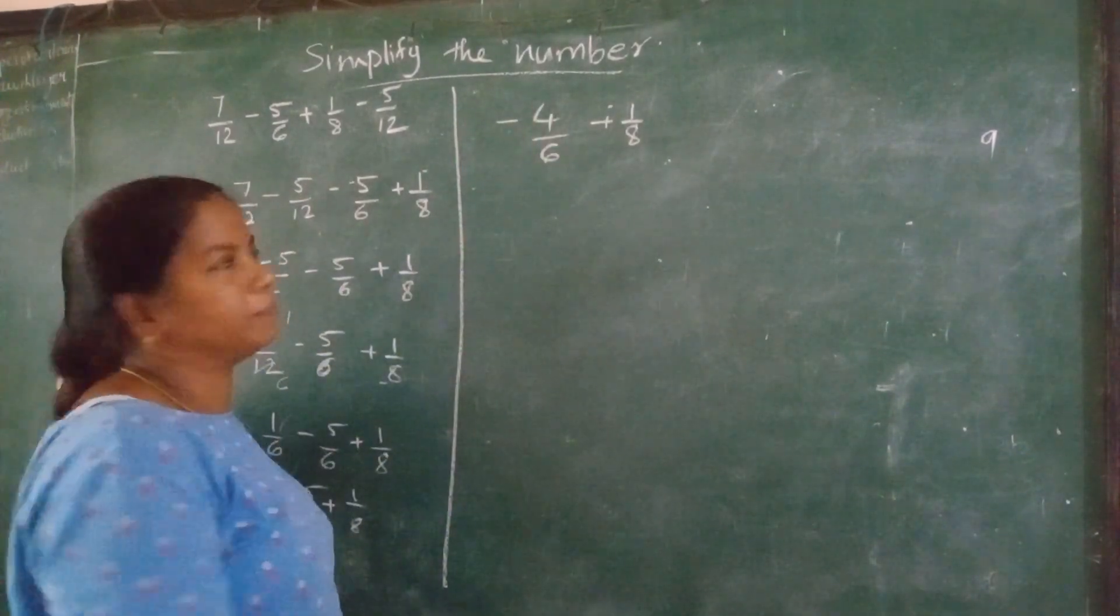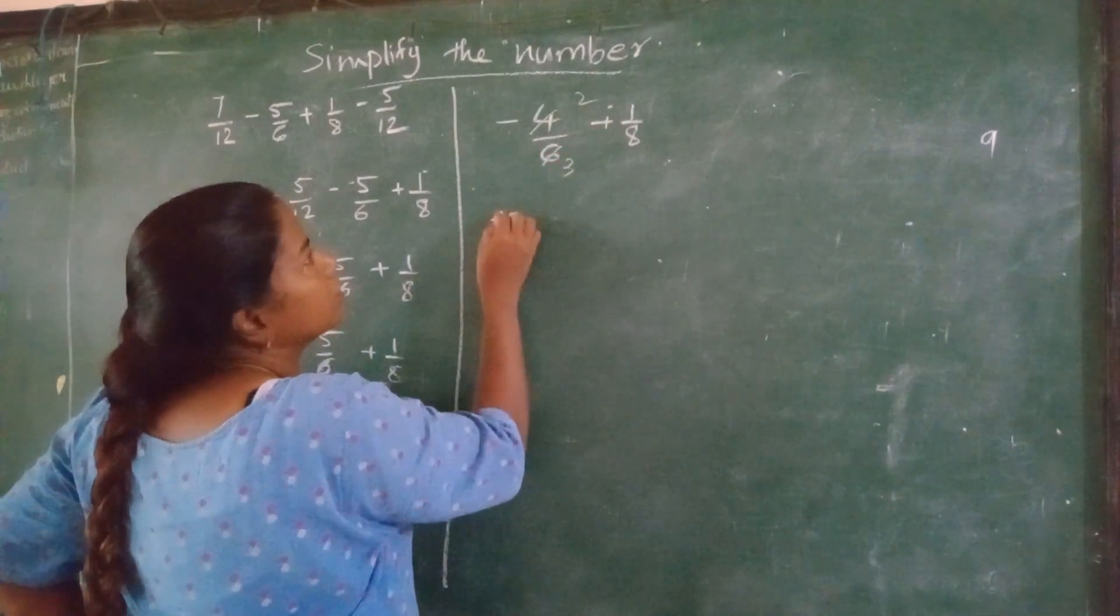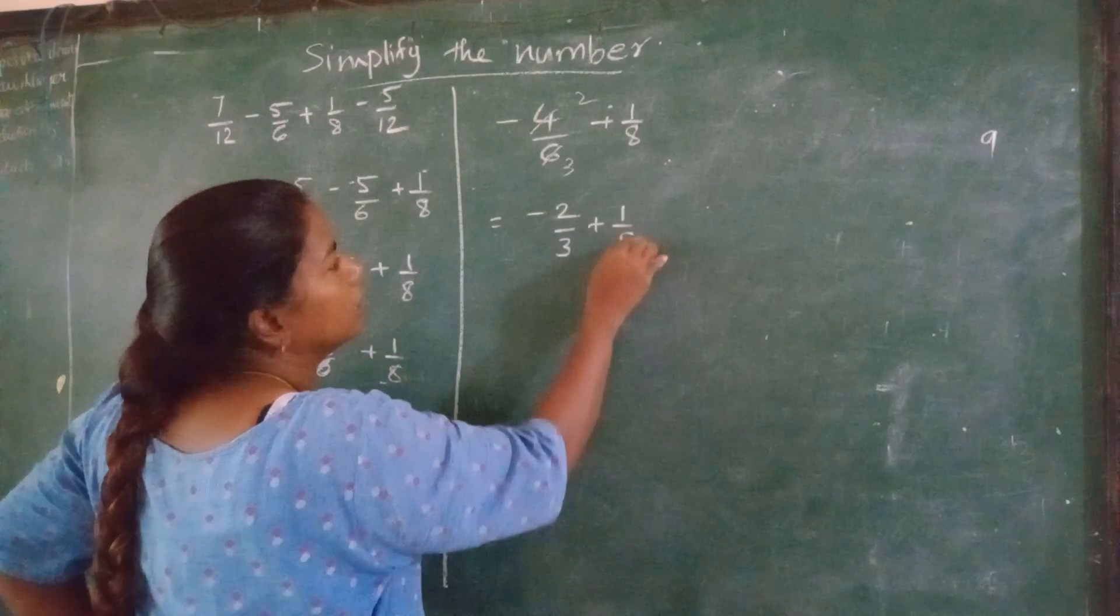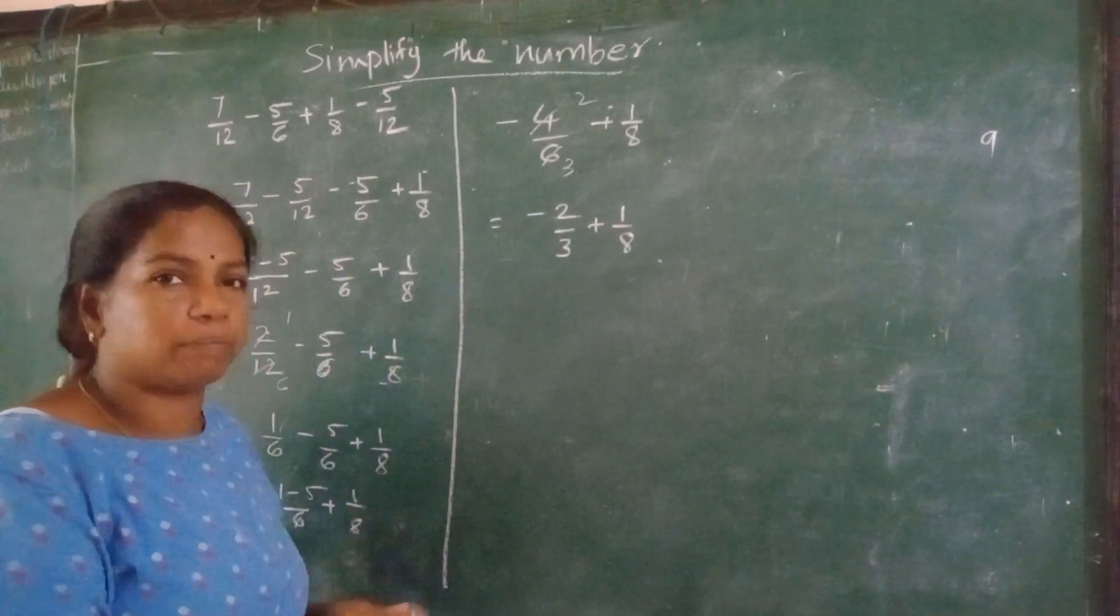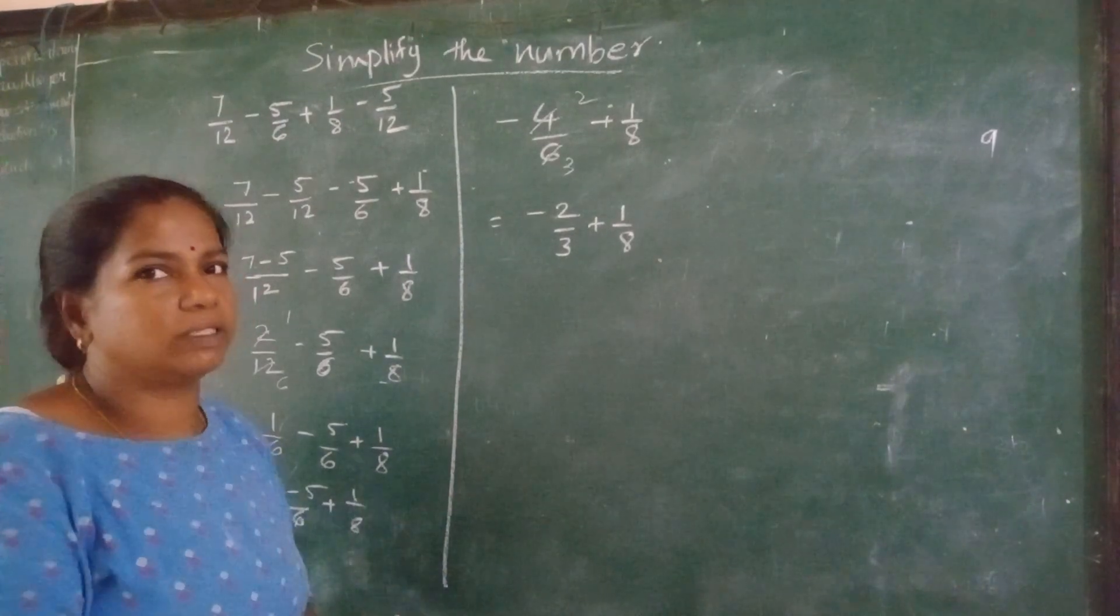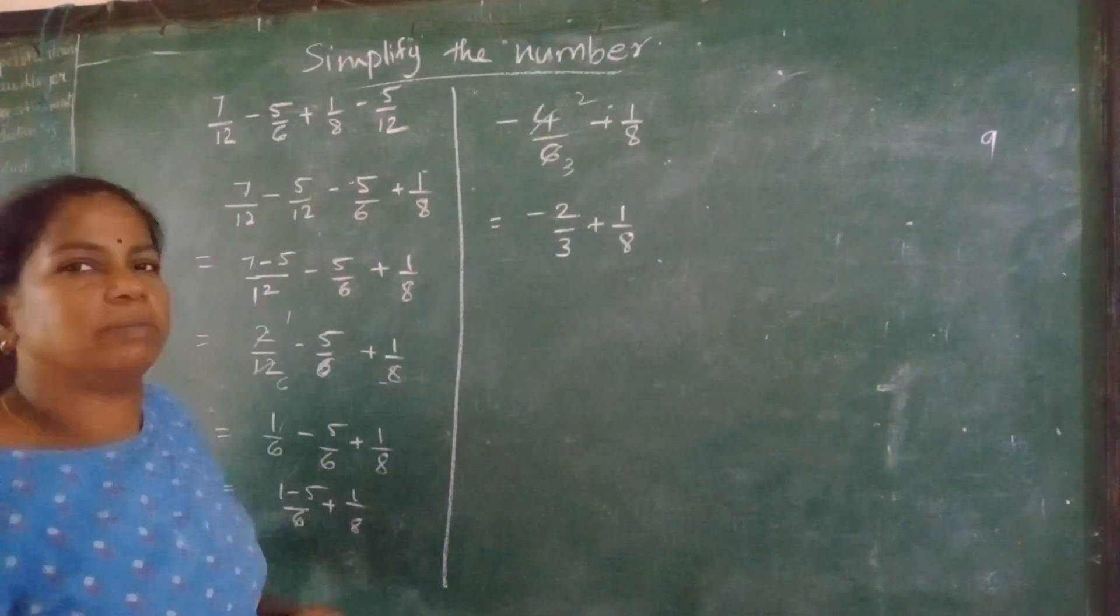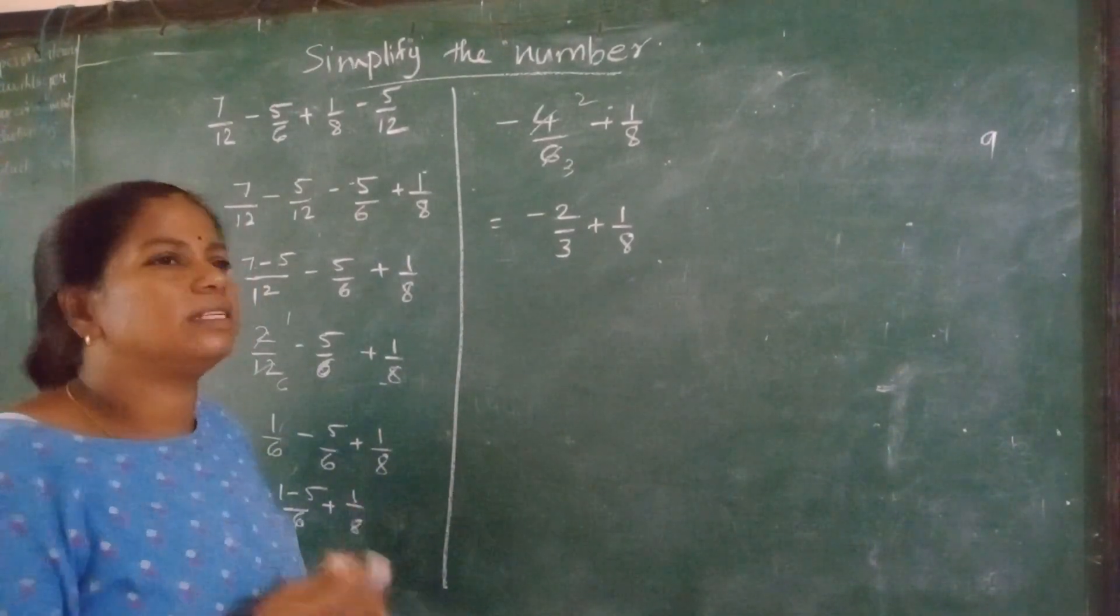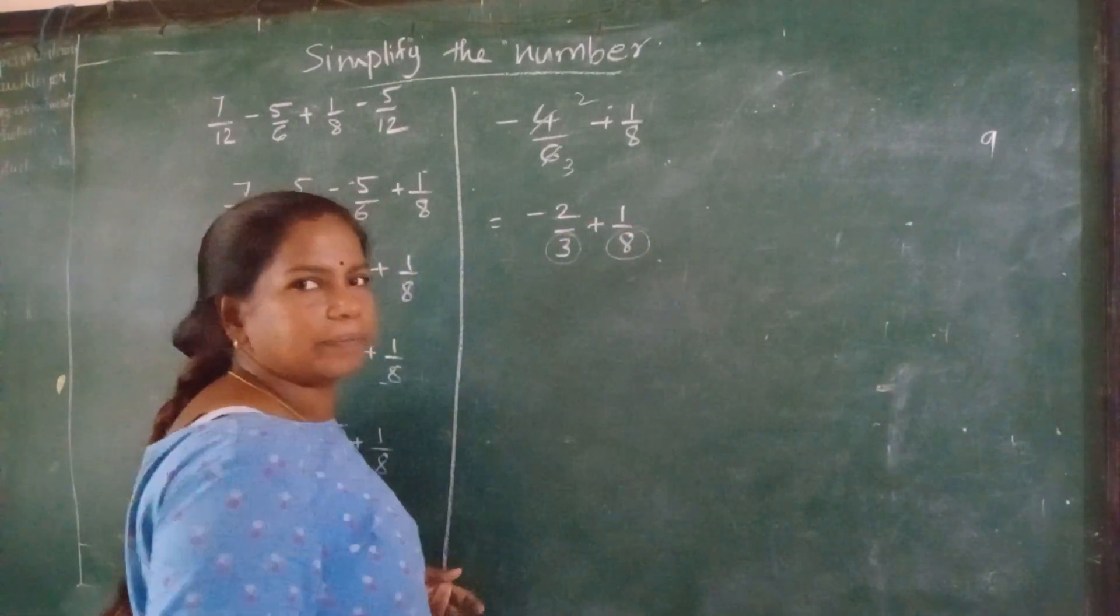See this I can reduce further. 2 twos are 4, 2 threes are 6. So minus 2 upon 3 plus 1 upon 8. We can go on reducing and make this sum simpler and then solve it. Otherwise you have to take the LCM of all the 4 numbers and then solve. It will be lengthy and more complicated. Now here we have to find only 3 and 8 LCM.